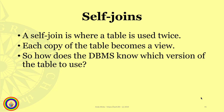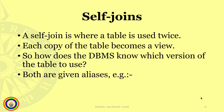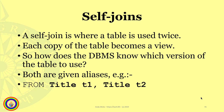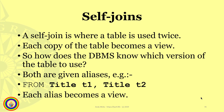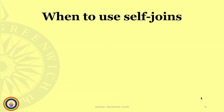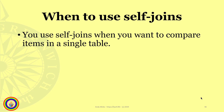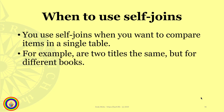Each copy of the table becomes a view. So how does the DBMS know which version of the table to use? That's quite simple — we're going to use aliases. For example: FROM title t1, title t2. You'll notice that the name of the table is the same but the aliases are different. Each alias becomes a view. So when do you use self joins? You use self joins when you want to compare items in a single table — for example, where two titles are the same but are different books.